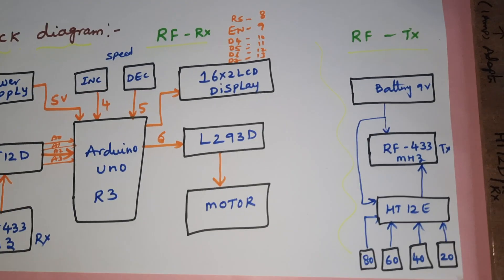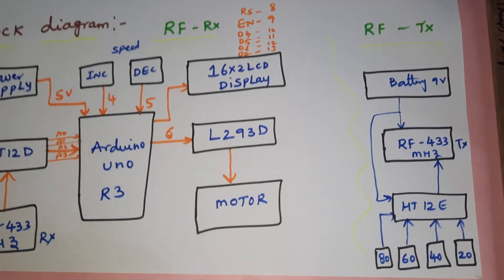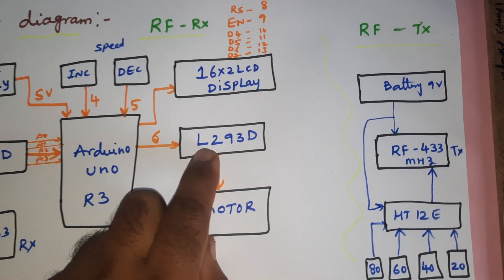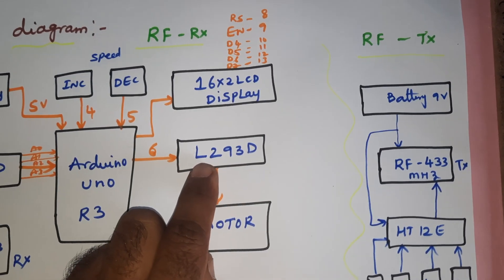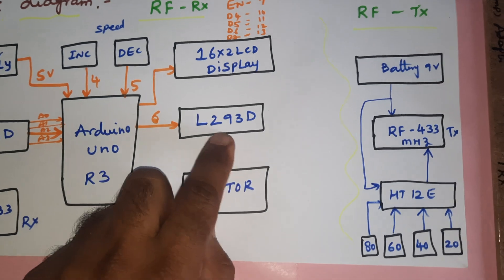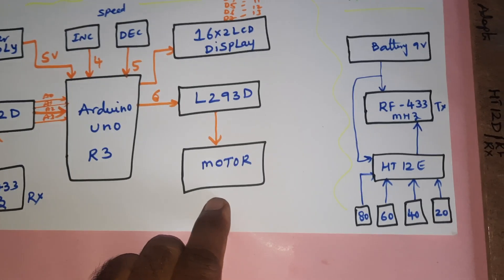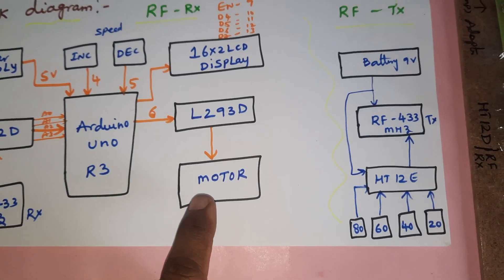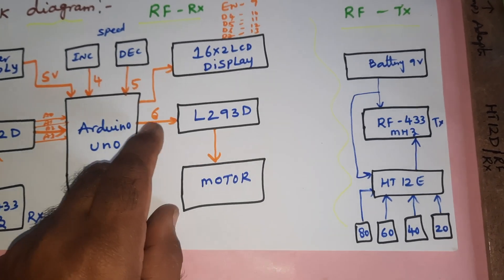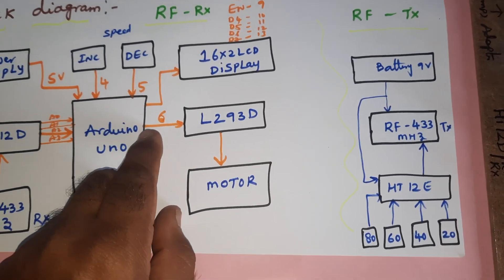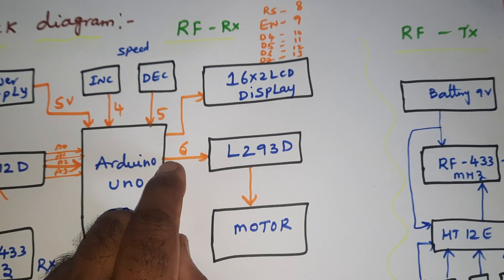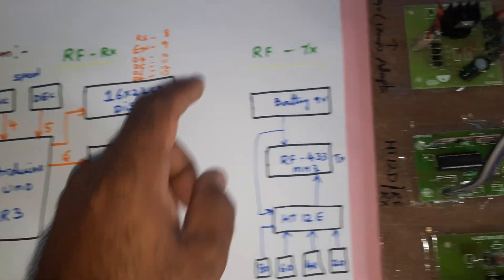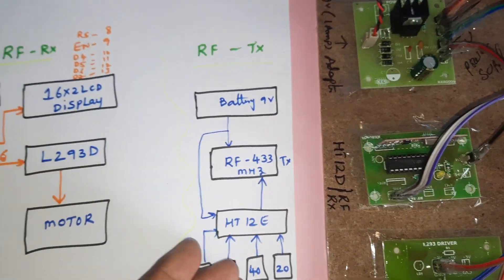For motor speed control, we are using an L293D motor driver IC and a 300 RPM motor with PWM technique. The PWM channel is GPIO pin 6.